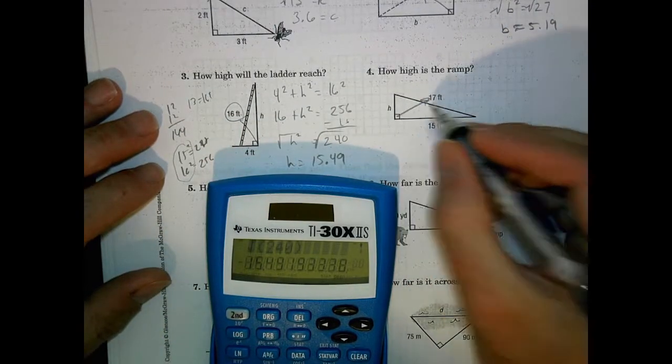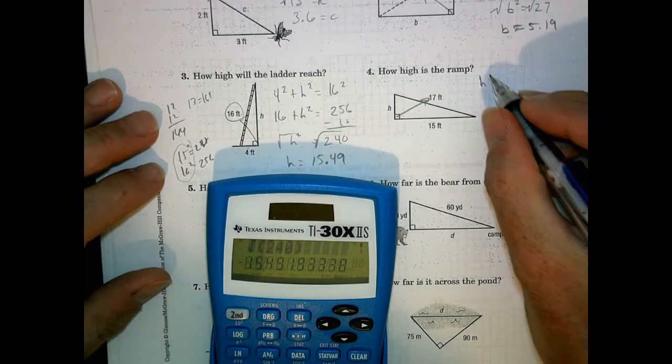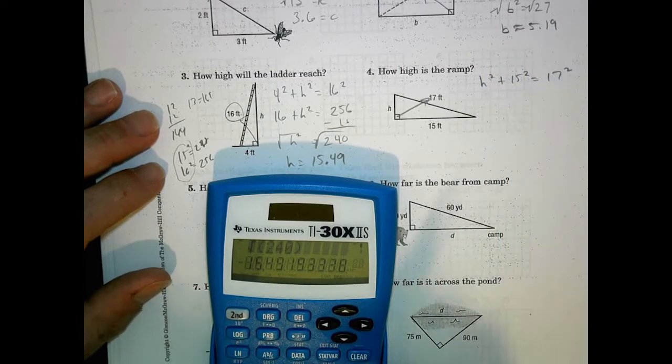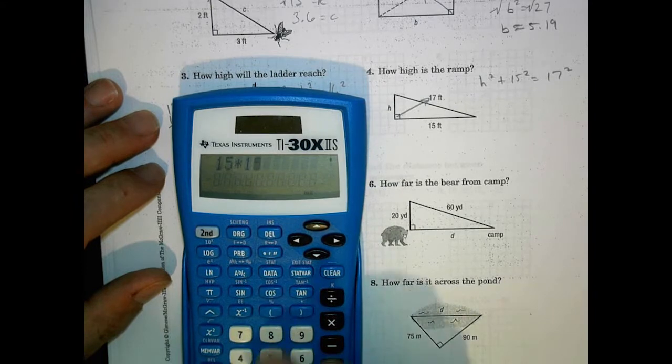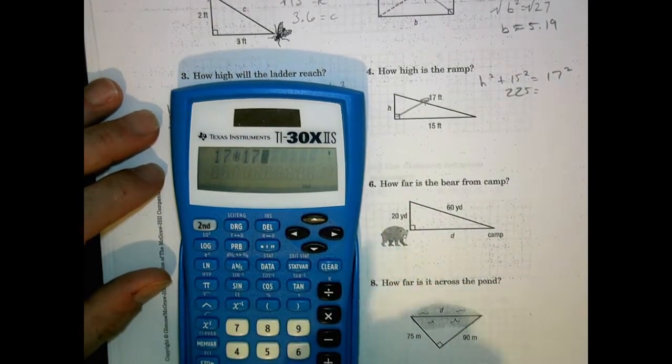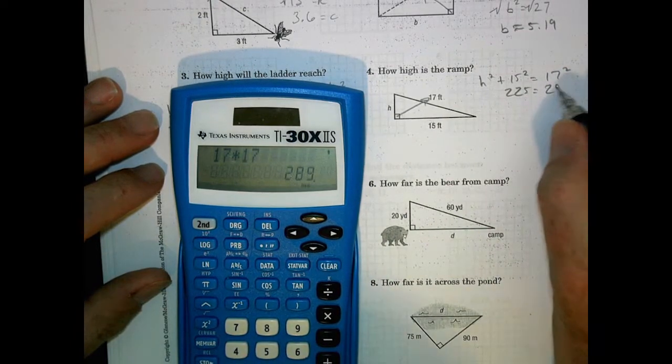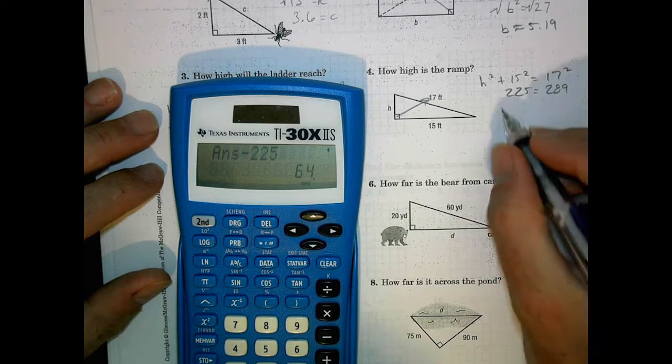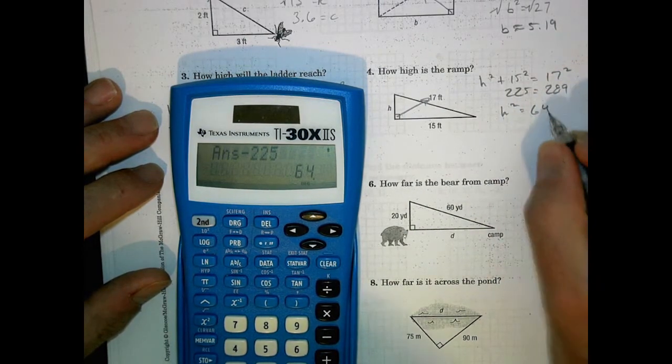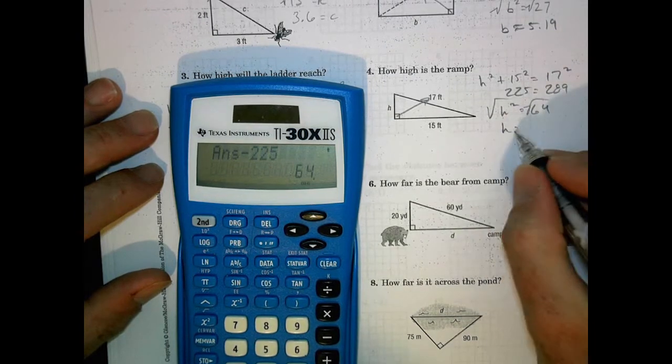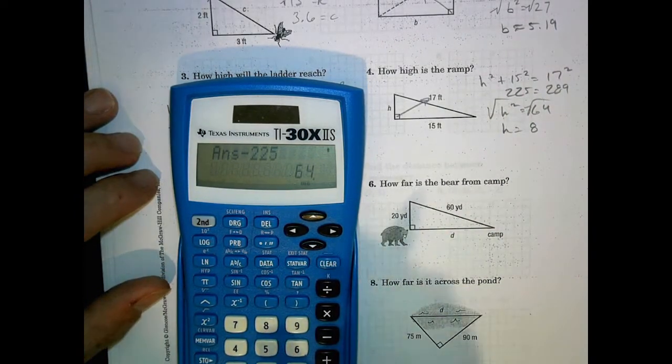Number 4, we have a c value there. So 8 squared plus 15 squared equals 17 squared. 15 times 15 is 225. 17 times 17 is 289. So we're going to subtract 225 from that. And we have 8 squared equals 64. This is a nice one. Why? Because 8 times 8 is 64. So we have 8 for an answer there.